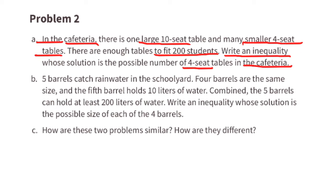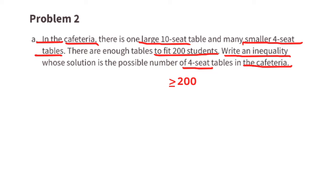Problem number 2, A. In the cafeteria, there is one large 10-seat table and many smaller 4-seat tables. There are enough tables to fit 200 students. Write an inequality whose solution is the possible number of 4-seat tables in the cafeteria. The information tells us that the number of students that can sit at the tables is greater than or equal to 200. There's one large 10-seat table, and an unknown amount of smaller 4-seat tables. Our inequality would be 4x plus 10 is greater than or equal to 200.